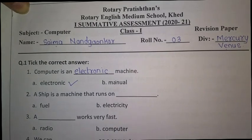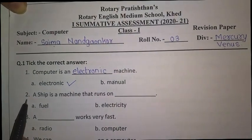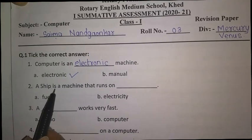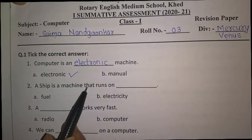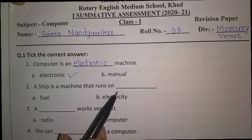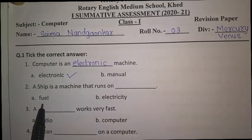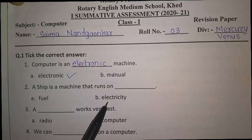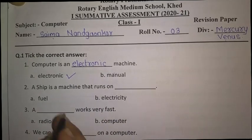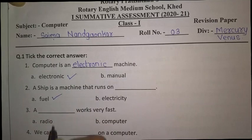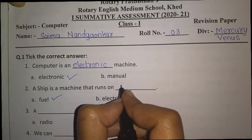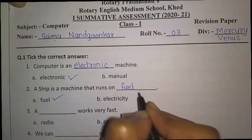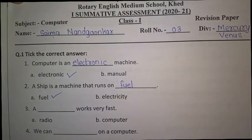Now let's move to question number 2. A ship is a machine that runs on dash — does it run on fuel or electricity? Very good! It runs on fuel. So let's give a tick and write here: fuel.